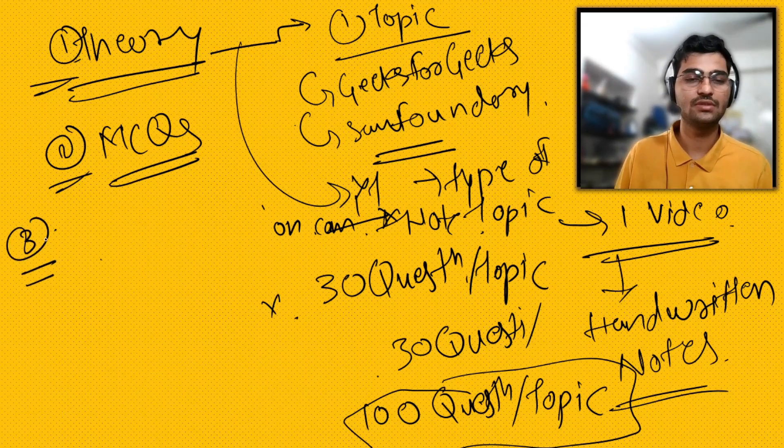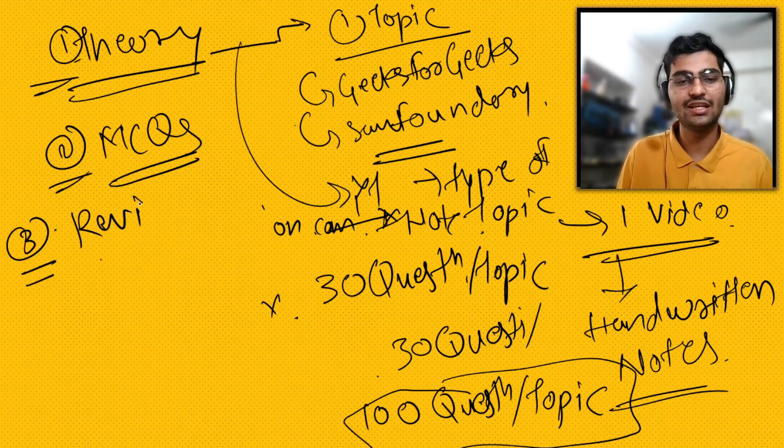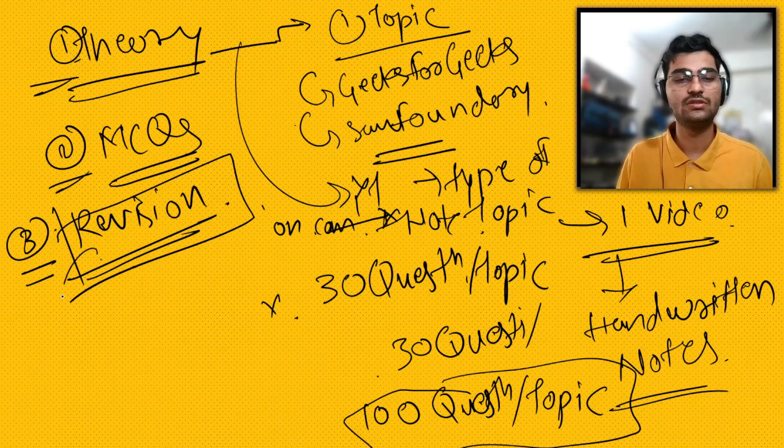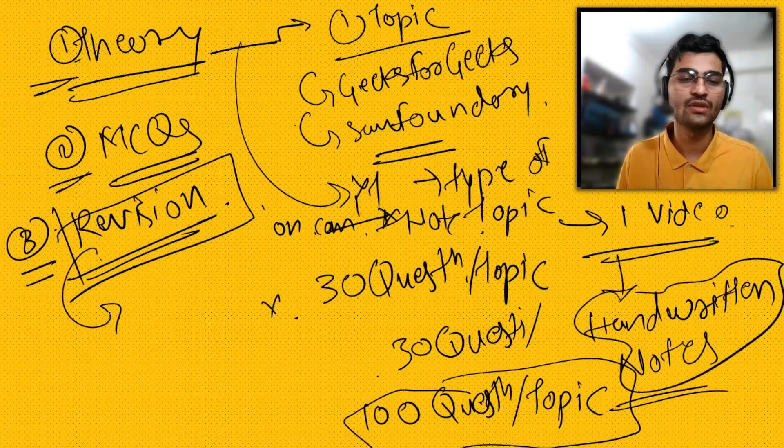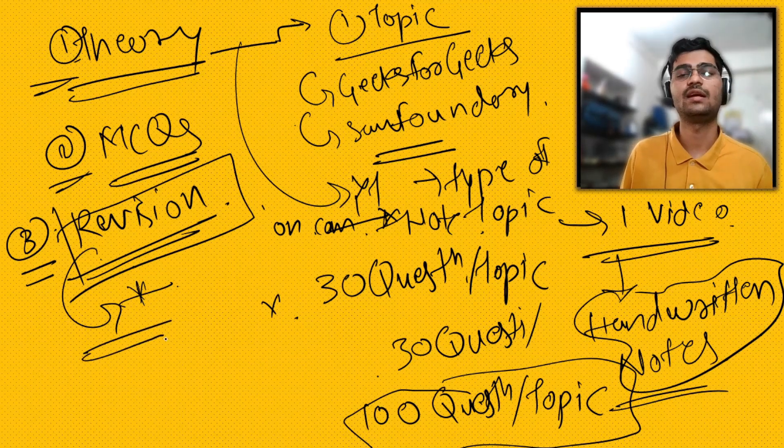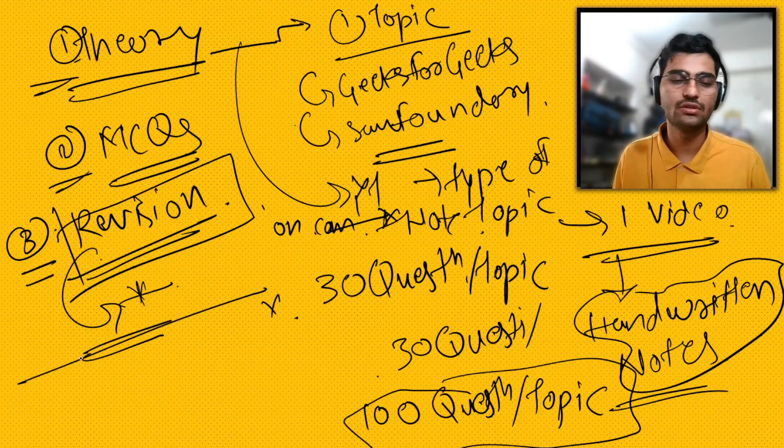If you have ample amount of time, go for Sanfoundry. I solved 30 questions, but I request you to solve 100 questions per topic from any website so it will be clear how questions come in the exam. The main thing I focused on was revision. As exam comes nearer, revision is the key and will be the game-changing process. Once you revise your handwritten notes or anything from where you prepared, you are good to go.